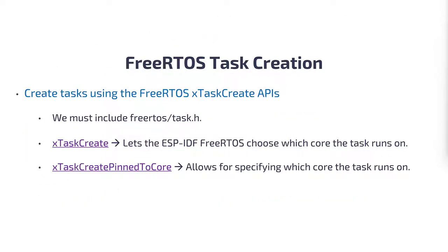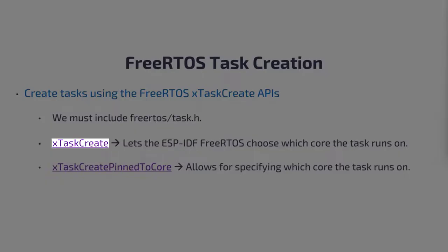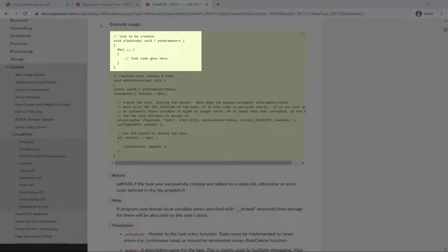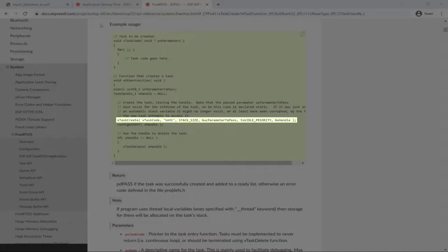In an RTOS implementation, the program is divided into different tasks, and each task runs continuously in an infinite loop. We can create FreeRTOS tasks using the xTaskCreate APIs, and to do that we'll need to include FreeRTOS/task.h. There are two API options: xTaskCreate, which lets the ESP-IDF FreeRTOS choose which core the task runs on, and xTaskCreatePinnedToCore, which allows specifying which core the task should run on. This is the basic structure of a FreeRTOS task with an infinite loop as the main body.